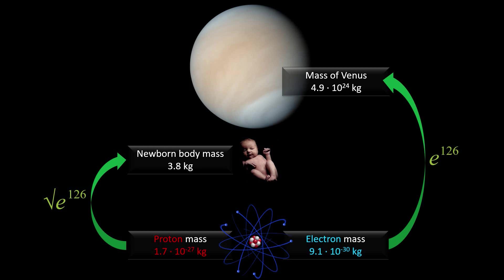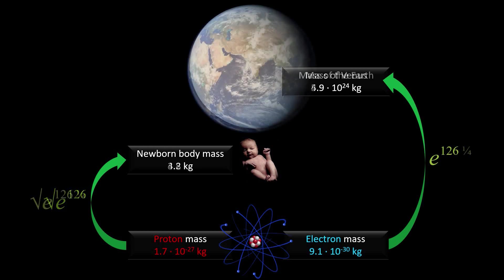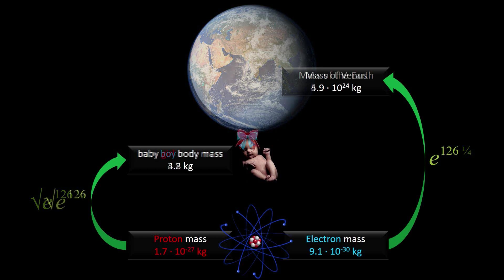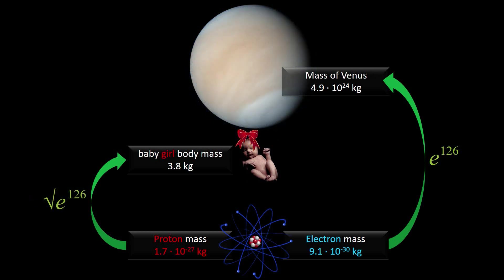If we proceed in the same way with the mass of the Earth, we get 4.2 kilogram, close to the average weight of a larger newborn. Statistically, baby boys are heavier than baby girls. It might well be that this difference corresponds with the mass difference between Earth and Venus.